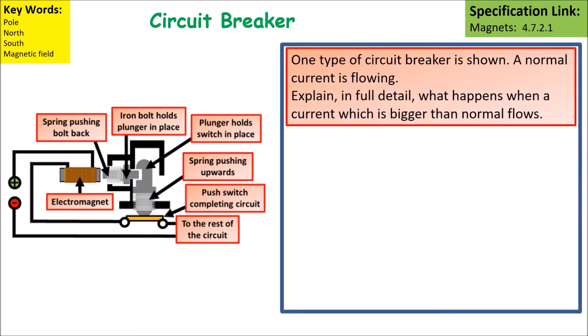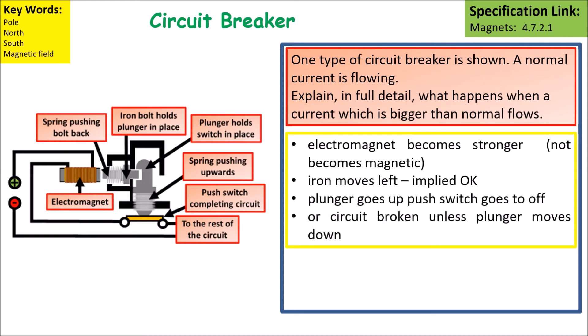One type of circuit breaker is shown in the diagram. We explain in full detail what happens when the current is bigger than normal. The important thing is that the electromagnet becomes stronger, so the iron moves left, so the plunger is pushed up and pulls away from the switch.